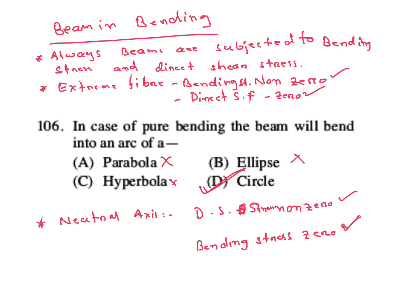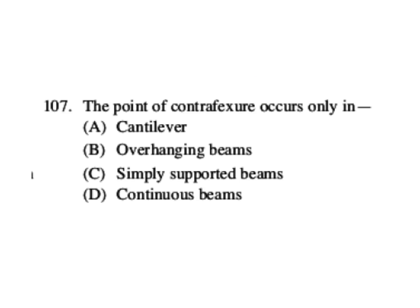Point of contraflexure occurs - point of contraflexure is the point for bending moment where bending moment changes sign, or zero bending moment, and beam changes curvature. All three points are important for point of contraflexure. So here you will get point of contraflexure in case of overhanging beam.